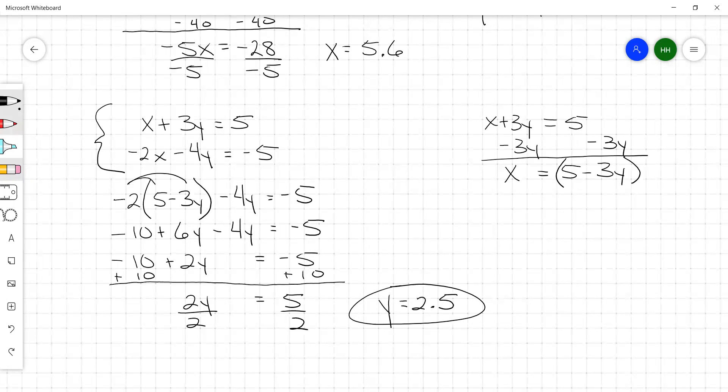Simplest place to use that would be right here. Our x is equal to 5 minus 3 times 2.5. So our x equals 5 minus 7.5. So our x equals negative 2.5.